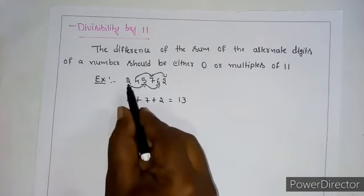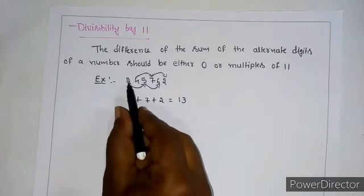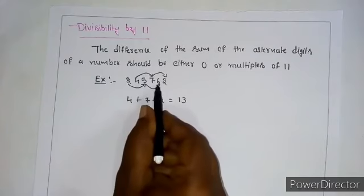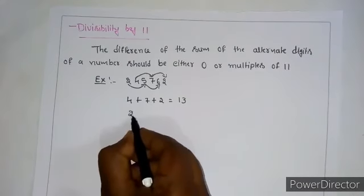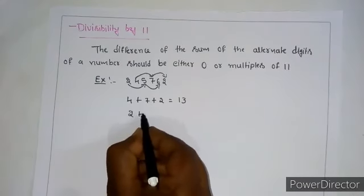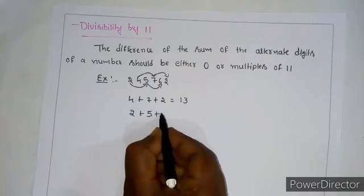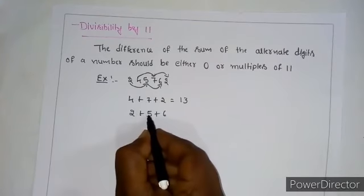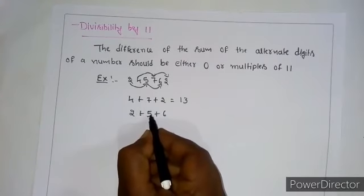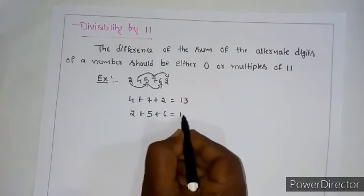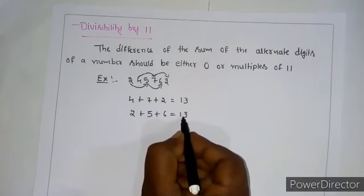Now take the second set of alternate digits: 2, 5, 6. 2 plus 5 plus 6: 2 plus 5 is 7, and 7 plus 6 is 13. We got 13 for this group as well.